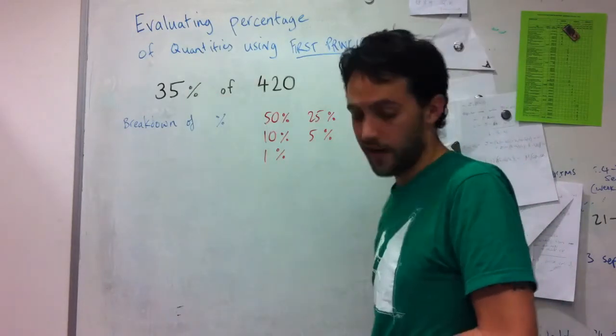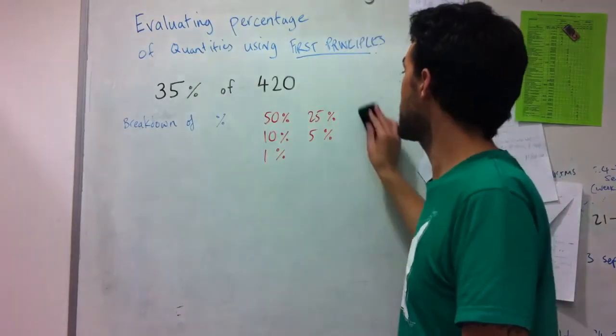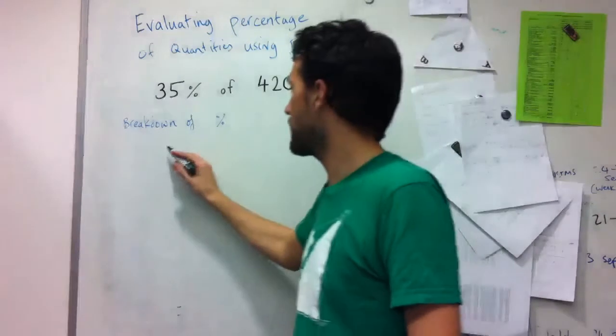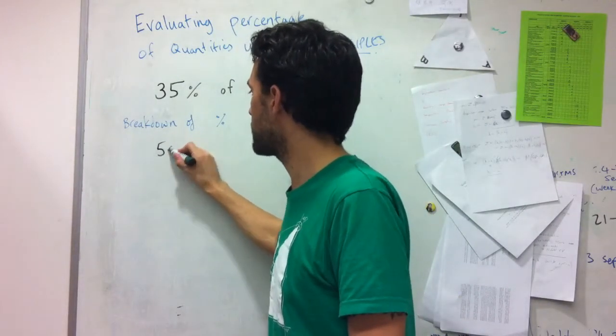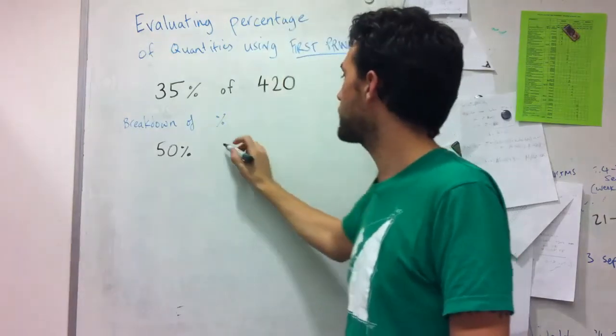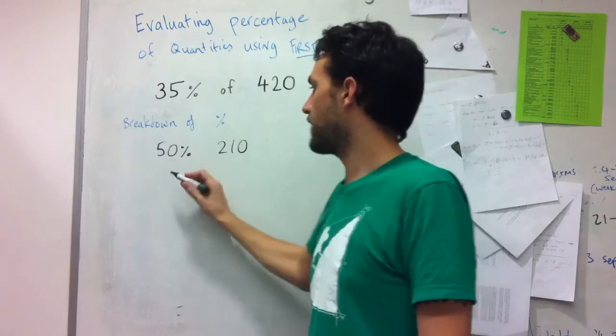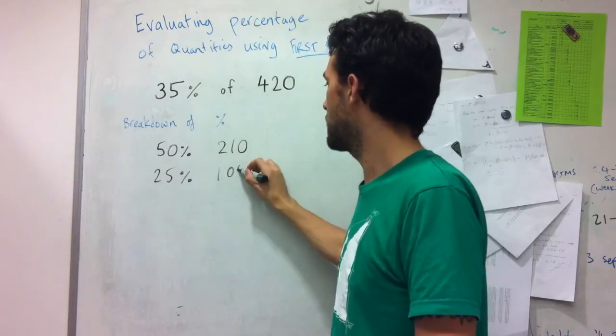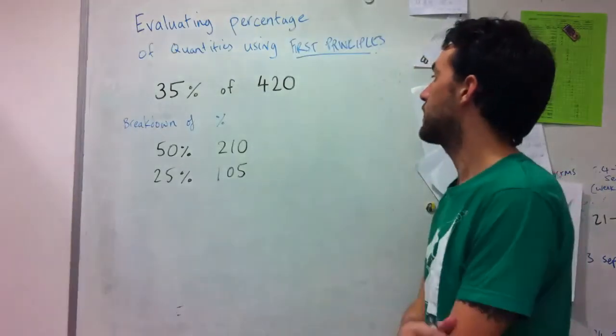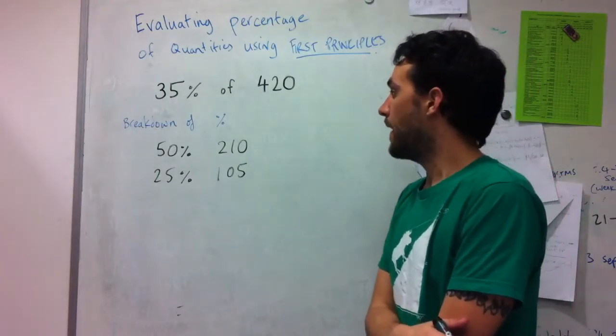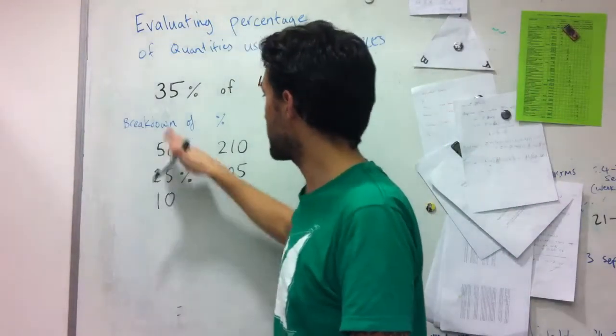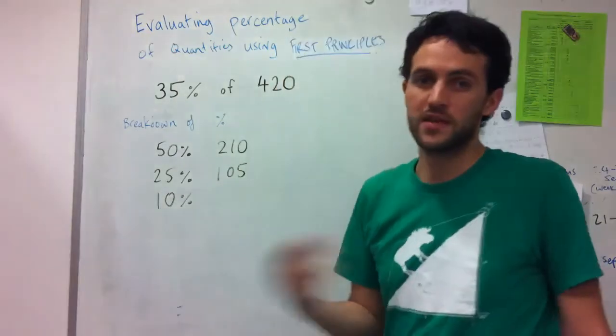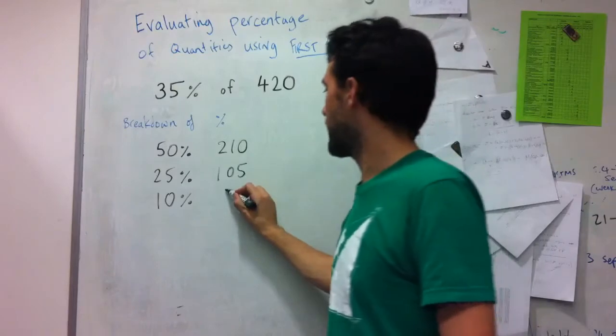So with working out 35% of 420, what I'd be inclined to do in this instance is firstly, if I work out 50% of 420 that's just half which is 210, and then halve that again to give me 25%, so a quarter of 420 is 105, and then another percentage that I can evaluate easily and that I can use with the 25% to get up to 35% is 10%. So 10% we can do because it's just dividing by 10, so in that case it's 42.